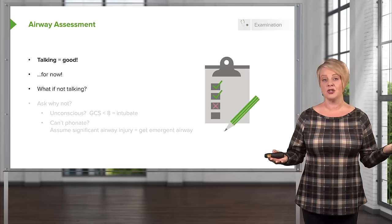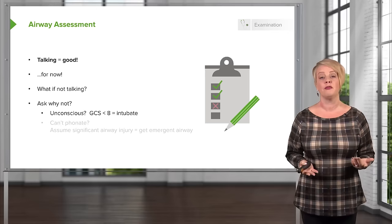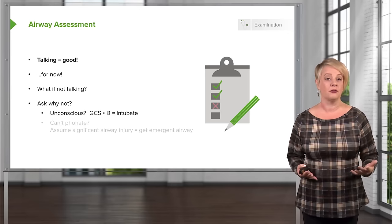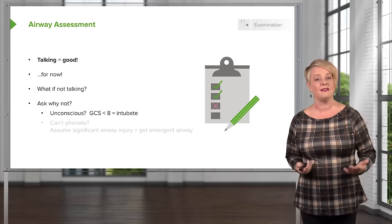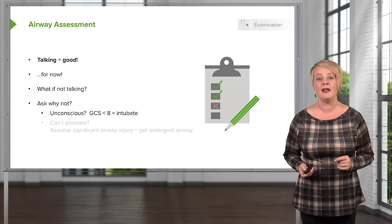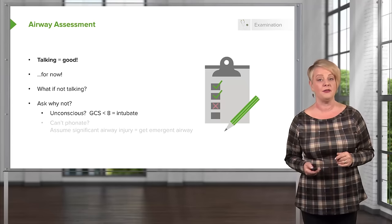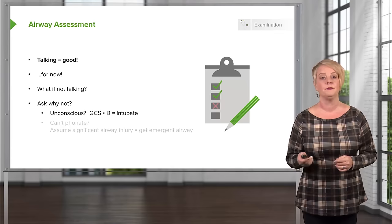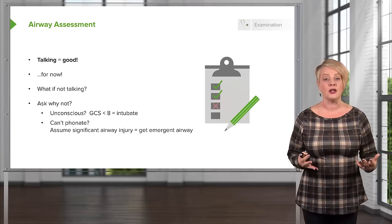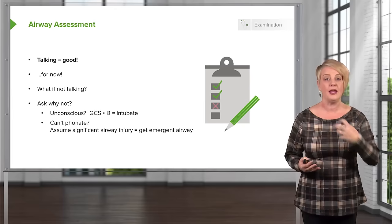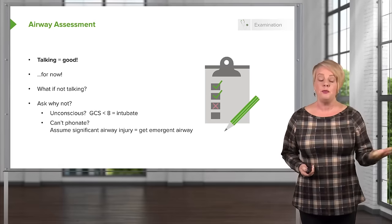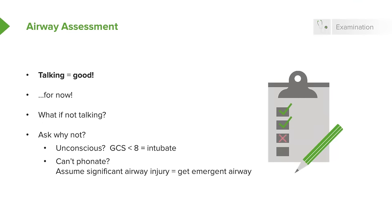What if the patient's not actually talking to you? The question you should ask yourself is why. If the patient is unconscious or unresponsive, that suggests a head injury, and if they have a significantly depressed GCS, you probably want to go ahead and provide definitive airway management in the form of intubation. If the patient is conscious but unable to phonate — they're trying to speak but can't — this is a sign of significant airway injury, and you want to address that quickly with emergent intubation or alternative airway management if intubation is impossible.